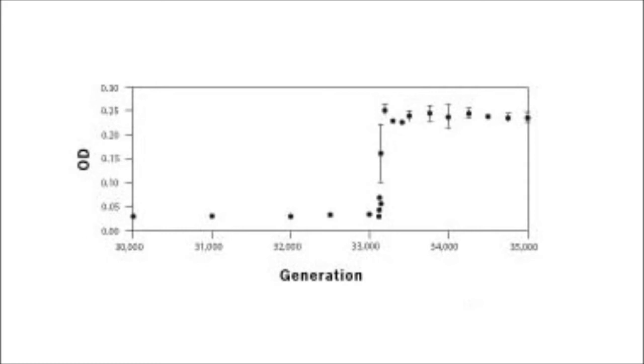This seemed to Lensky unlikely, for an interesting reason. Knowing the average mutation rate of each gene in the genome of these bacteria, he calculated that 30,000 generations was long enough for every gene to have mutated at least once in each of the twelve lines.